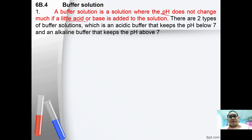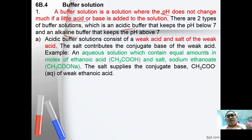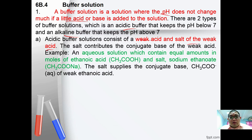Generally there are two types of buffer solutions: acidic buffer solution and alkaline buffer solution. An acidic buffer solution consists of a weak acid and the salt of that weak acid. For example, a solution containing equal moles of ethanoic acid, CH3COOH, and sodium ethanoate, CH3COONa. The salt supplies the conjugate base CH3COO- of the weak ethanoic acid.